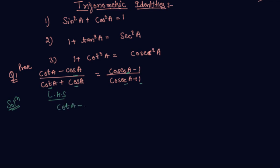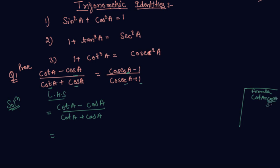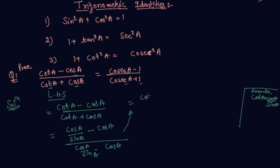So LHS is cot(a) minus cos(a) upon cot(a) plus cos(a). The formula for cot(a) is cos(a) upon sin(a). So substituting, this becomes cos(a)/sin(a) minus cos(a), all upon cos(a)/sin(a) plus cos(a). Taking cos(a) common from numerator, we get 1/sin(a) minus 1, and from denominator, 1/sin(a) plus 1.